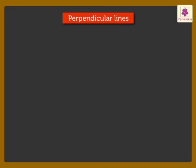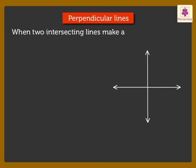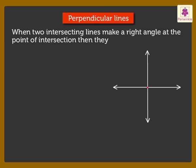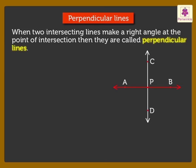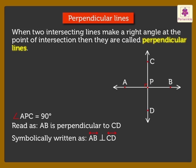When two intersecting lines make a right angle at the point of intersection, then they are called perpendicular lines. Here, line AB and line CD intersect at point B. Here, angle APC is equal to 90 degrees. Hence, these two lines are perpendicular lines. It is written as, line AB is perpendicular to CD. It is written as shown. Look, here all four angles at the point of intersection P are right angles.